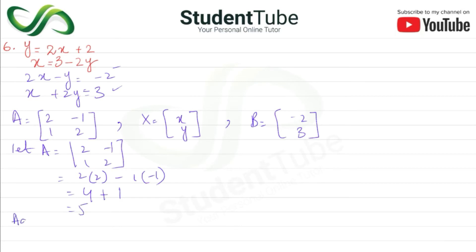Adjoint of A: we get [2, 1; -1, 2]. So X equals A inverse multiplied by B. A inverse will be 1 upon 5 times adjoint A.